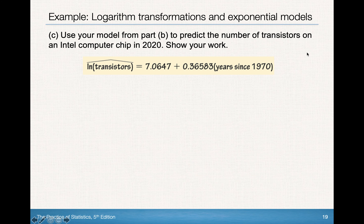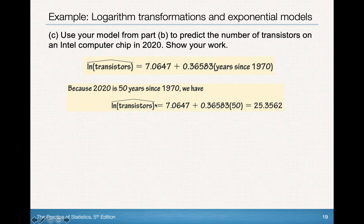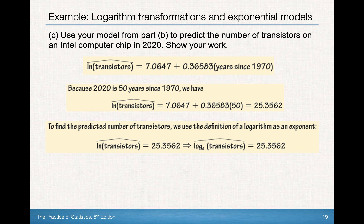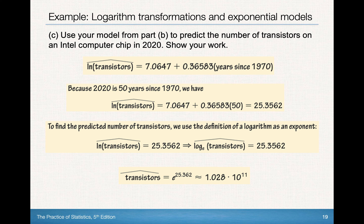To predict the number of transistors in 2020, years since 1970 equals 50. Plugging in: ln(transistors-hat) = 7.0647 + 0.36583 · 50 = 25.3562. To convert from the natural log back to transistors, we compute e^25.3562, which gives approximately 1.028 × 10^11 transistors — a very large number.